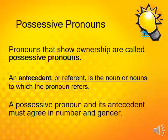The antecedent or referent is the noun or nouns to which the pronoun refers. A possessive pronoun and its antecedent must agree in number and gender. Number means singular or plural, and gender means masculine, feminine, or neuter.